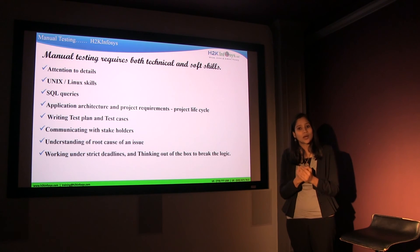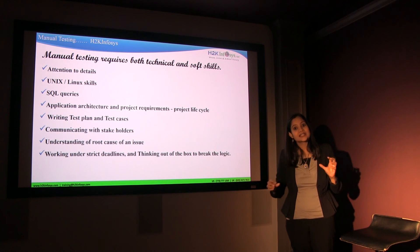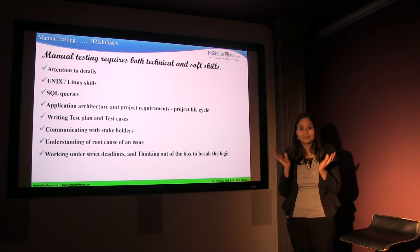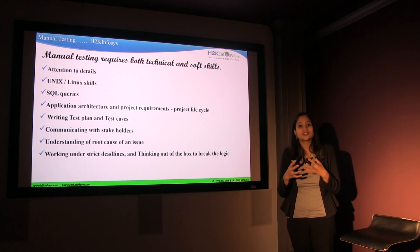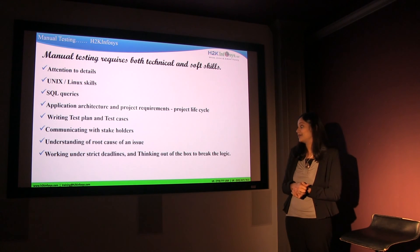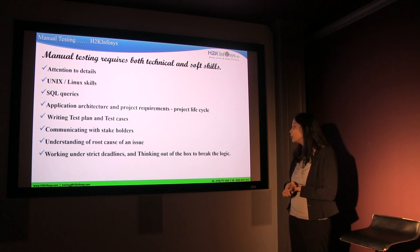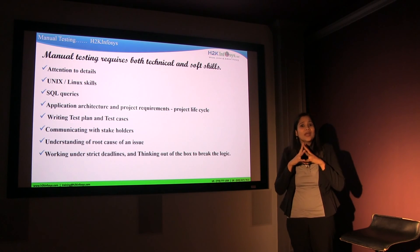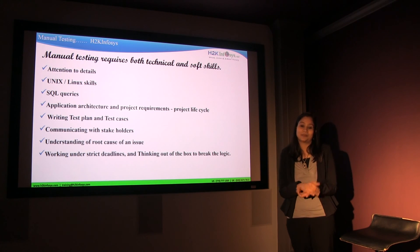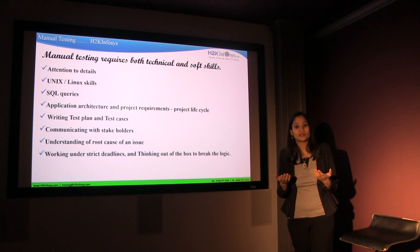Working under strict deadlines and thinking out of the box to break logic are also critical skills. As a quality assurance analyst, you are the last in the pipeline — the developer has finished, the project manager has done the planning, and when the project comes to you, you are the last one. You will be working under very strict deadlines and tremendous stress. You also need to think differently about an application: rather than looking at it from a stereotypical standpoint, think of different scenarios to test it. These are the primary skills a QA analyst should have or develop over time to be successful.